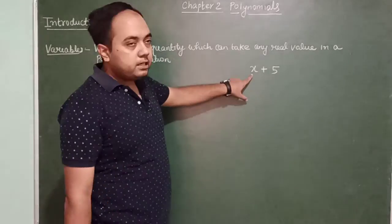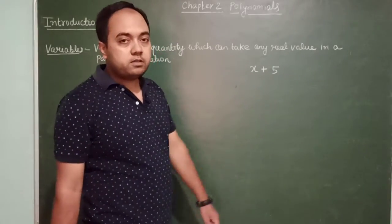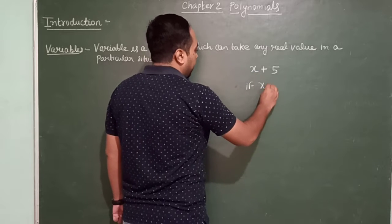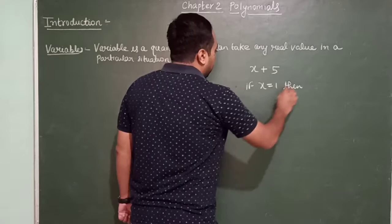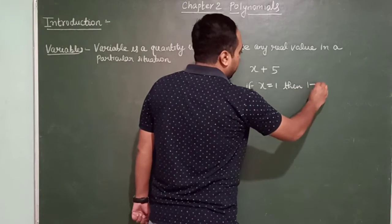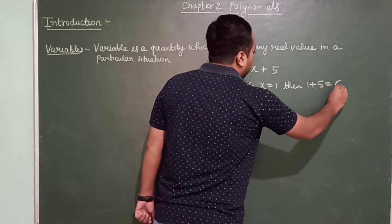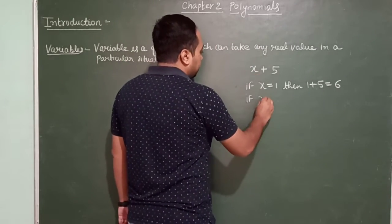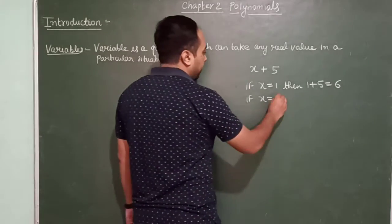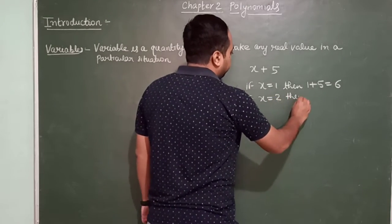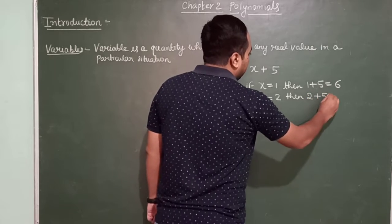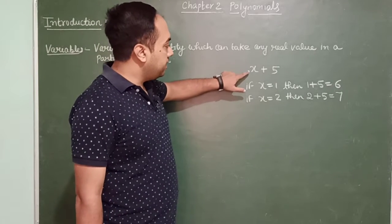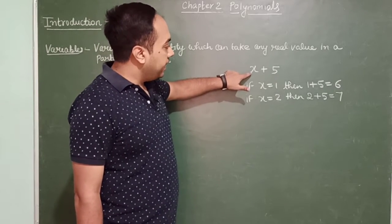Suppose there is an expression x plus 5. Now if I replace x by 1, then 1 plus 5 is equal to 6. In the same manner, if this x in some other situation is replaced by 2, then 2 plus 5 is equal to 7. So in this expression you can see that the value of x keeps on changing.